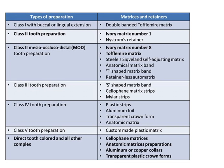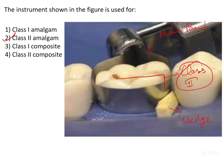For Class 2 tooth preparation, the Ivory matrix system Number 1 and Nystrom's restoration are used. For Class 2 mesioclusal-distal preparations, the Ivory matrix Number 8 and Toffelmyer matrix are ideal. For direct tooth-colored and other complex restorations, cellophane matrices, anatomic matrices, aluminum or copper collars, and transparent plastic round forms are used. The answer to the question is Class 2 amalgam restoration using the Toffelmyer matrix system.